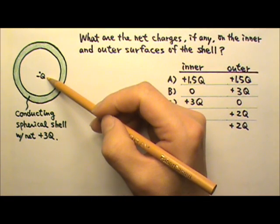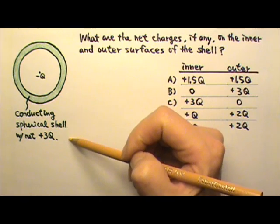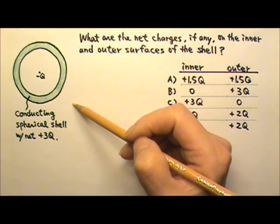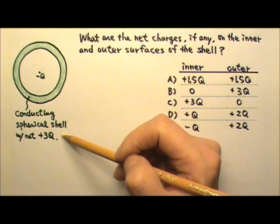A point charge negative q is located at the center of a conducting spherical shell, shown in this cross-sectional view. The net charge on the conducting shell is positive 3q.